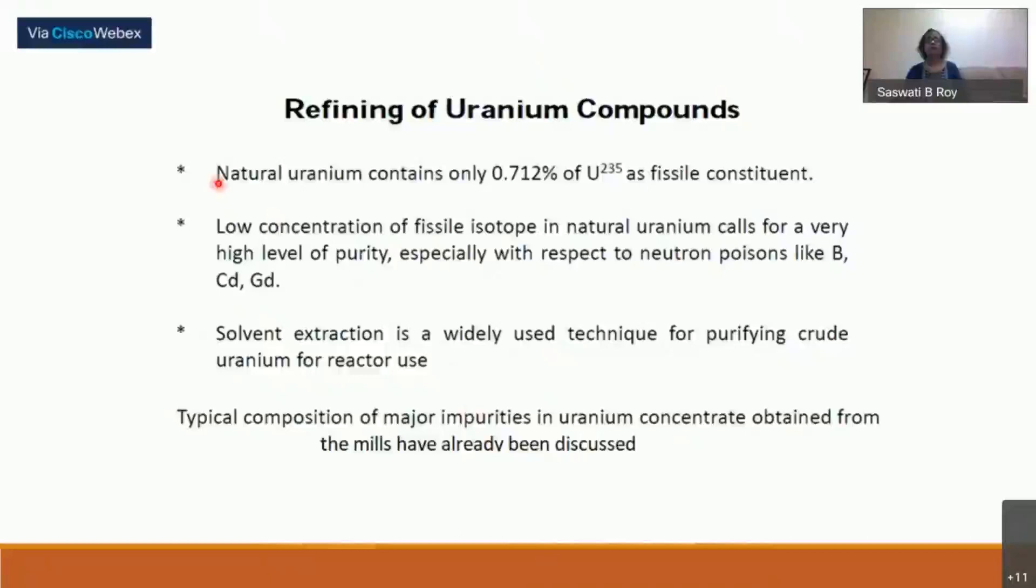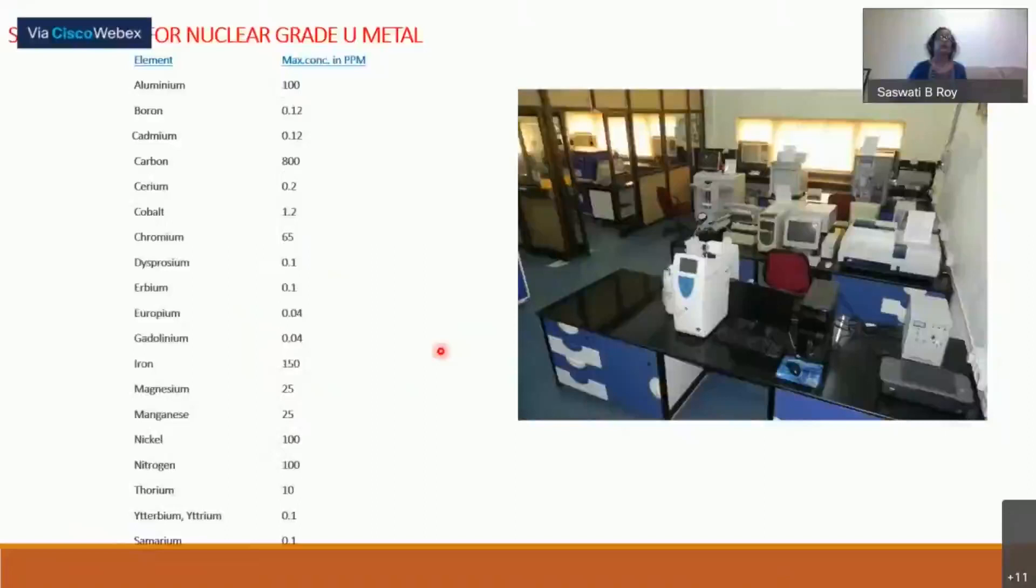This is detailing of refining. Natural uranium contains only 0.712% U-235, so you need very high grade of purity. Most impurities which are neutron eaters - gadolinium, boron, cadmium - will be removed by solvent extraction. If you see the specification of uranium metal, very high grade purity is needed. Specifications like Gd, europium 0.04 ppm. To maintain this purity level is very difficult but solvent extraction is a really good way of doing this.